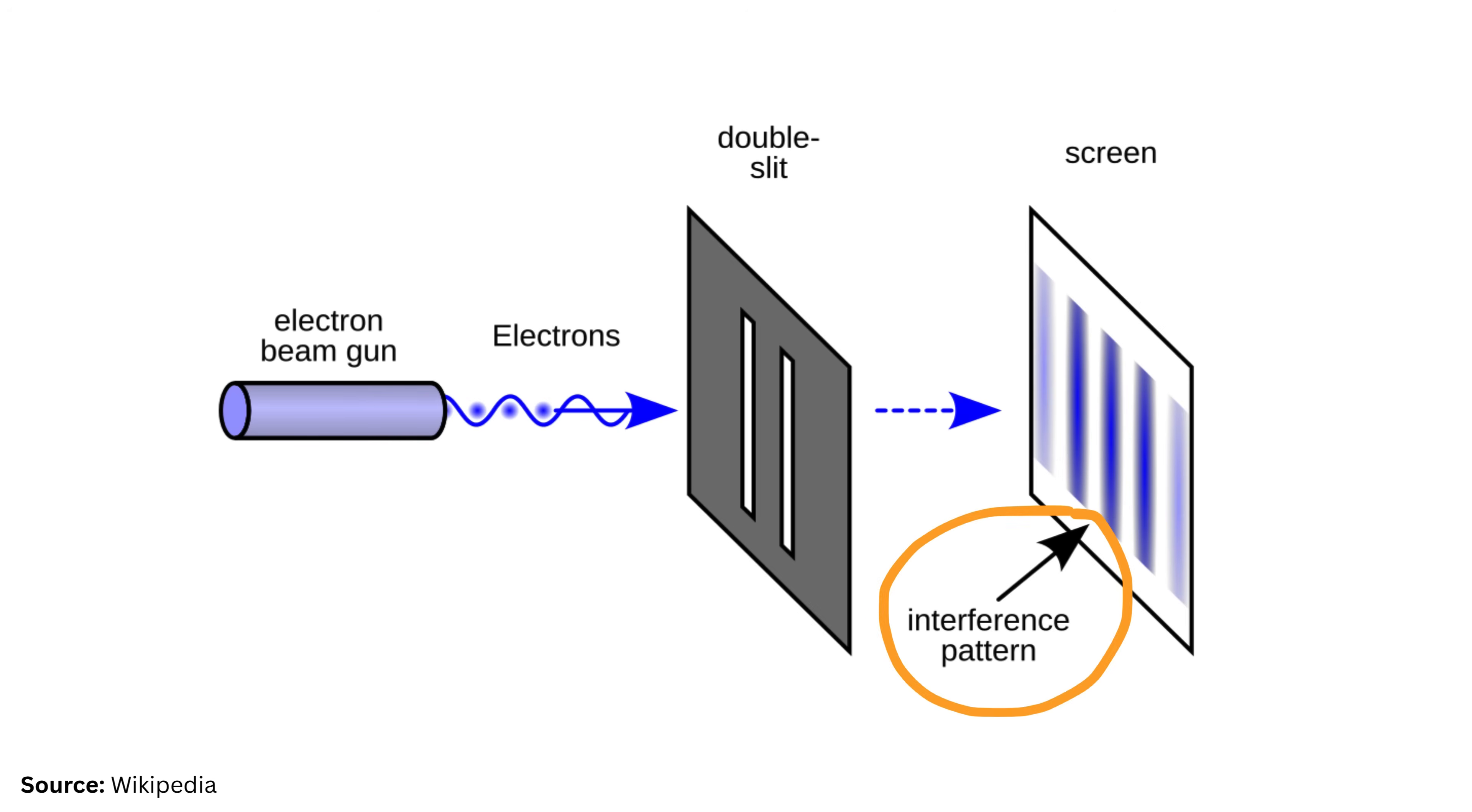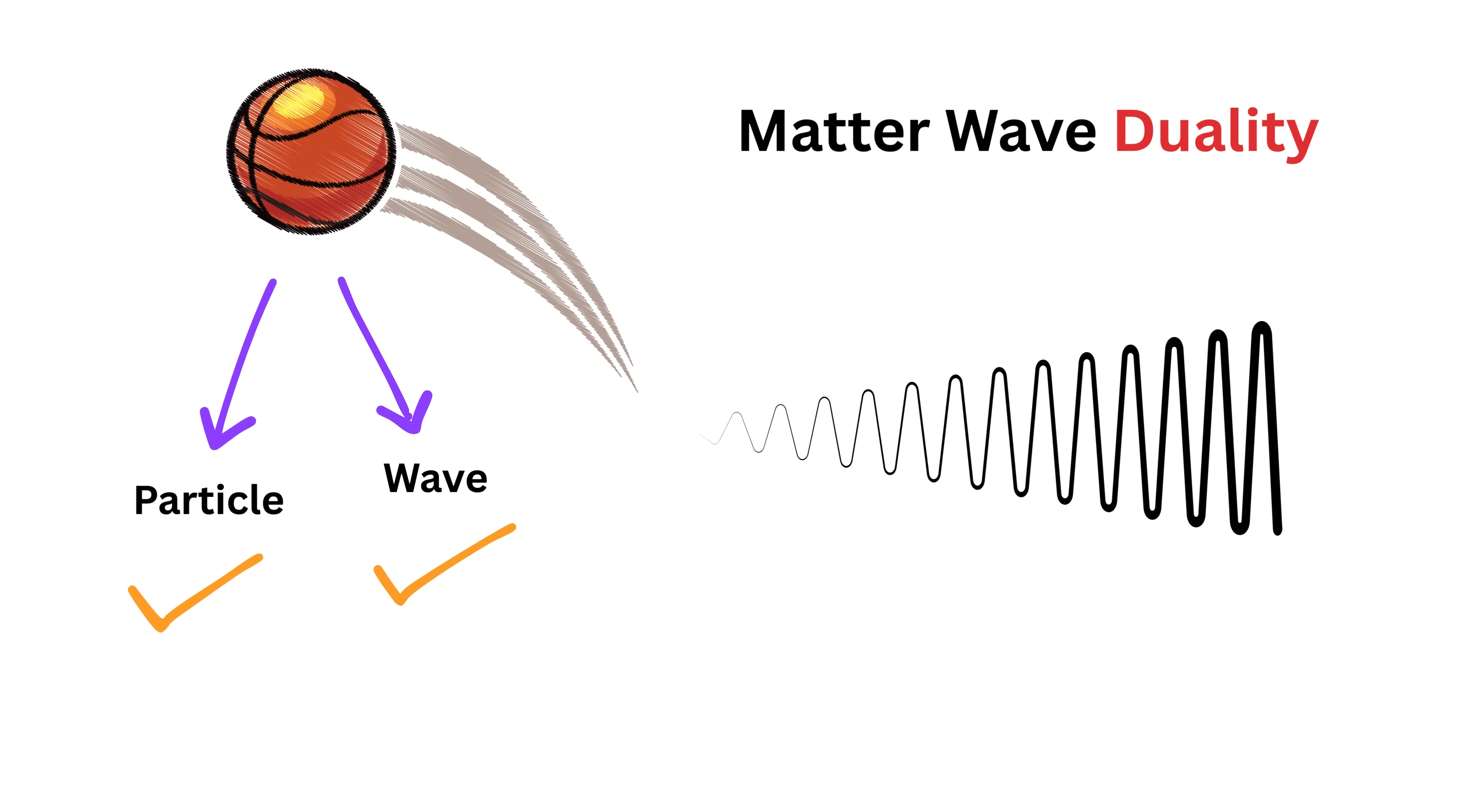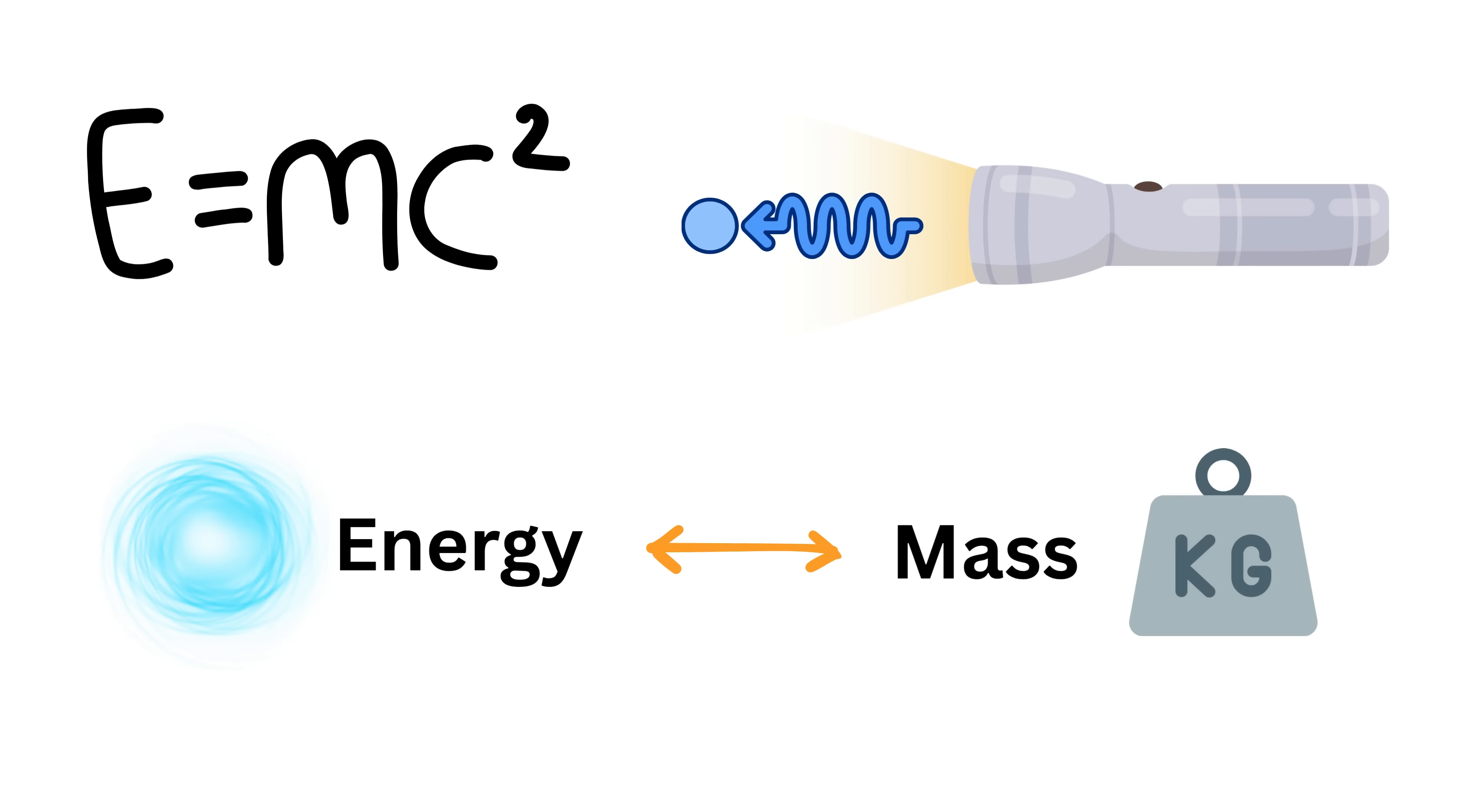Now that we understand the dual nature of the universe, we return to our earlier puzzle: how can light or photons have energy if they have no mass?